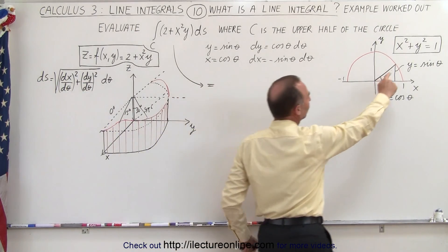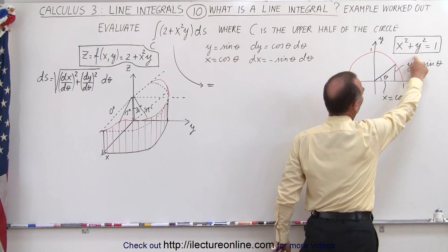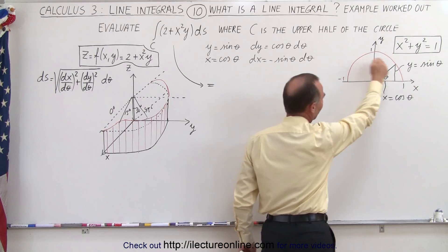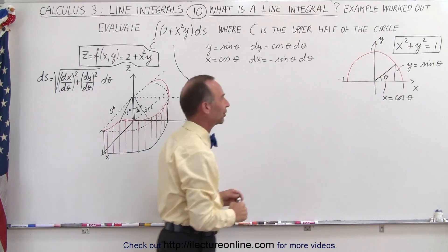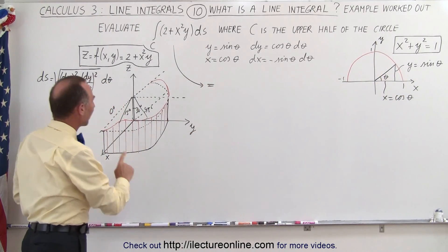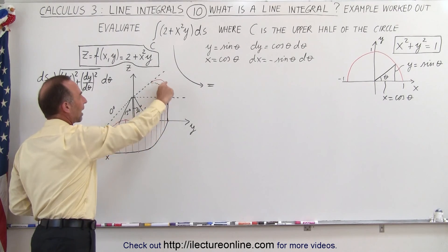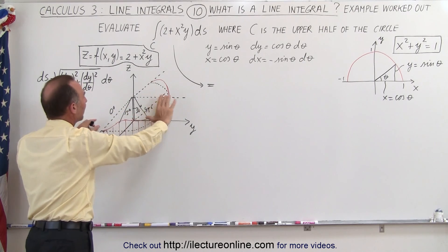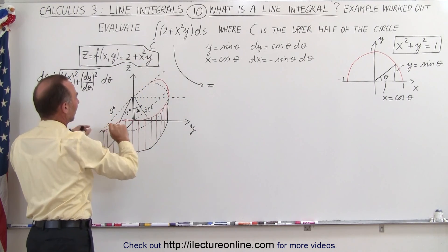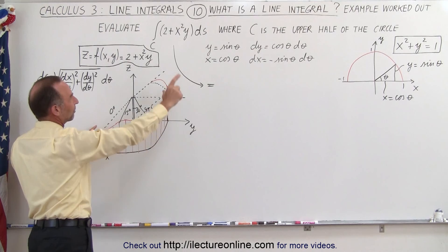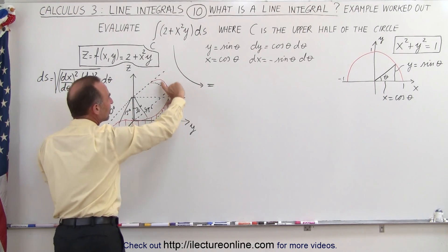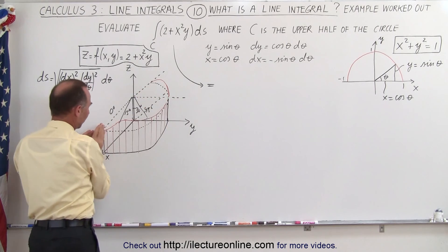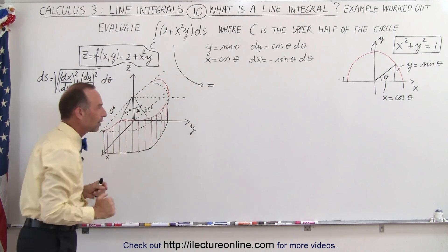We're going to do a line integral using the equation x squared plus y squared equals 1 — only the upper half of that, the semicircle which is the upper half of the full circle. Notice that we then have the equivalent of that red line here that indicates the circle portion embedded on top of the function. What we're trying to do is calculate the area underneath that curve along the semicircle from one end to the other.